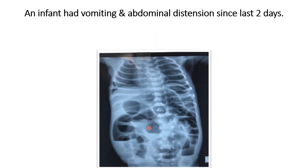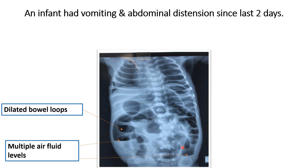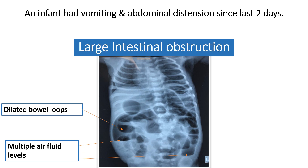In this X-ray, you can see characteristic air-fluid levels present throughout the abdomen. This is the X-ray of an infant who had vomiting and gross abdominal distension since the last two days. The abnormal radiological finding is dilated bowel loops — this is the ascending colon, this is the transverse colon, and this is the descending colon — with multiple air-fluid levels present throughout the abdomen. The diagnosis for this X-ray is large intestinal obstruction.